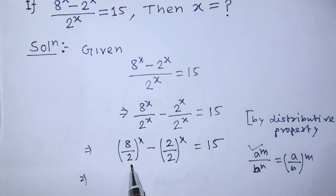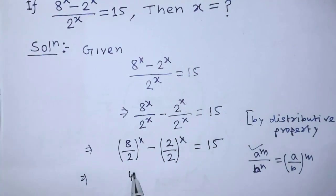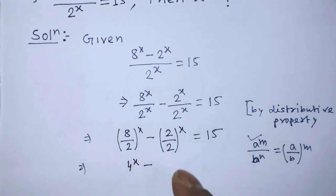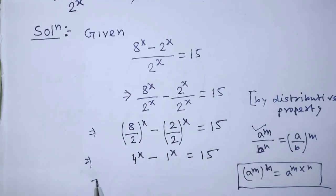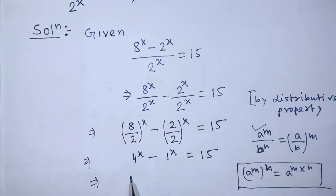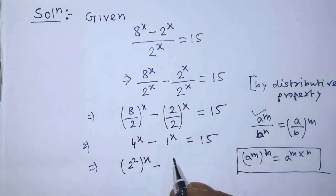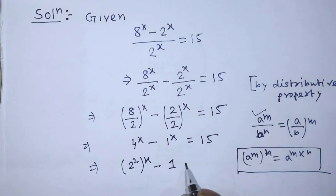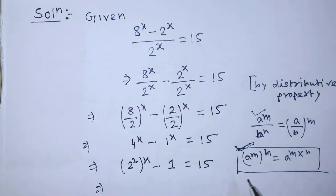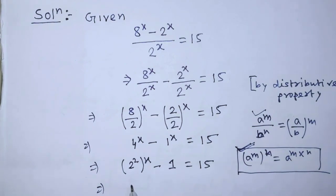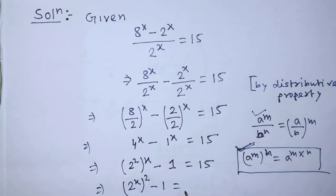On the left hand side of this equation, in the place of the first term we can write 4 to the power x, and in the place of the second term we get 1 to the power x, which equals 15. So on the left hand side, we can write 2 to the power x, whole to the power 2, minus 1 is equal to 15.